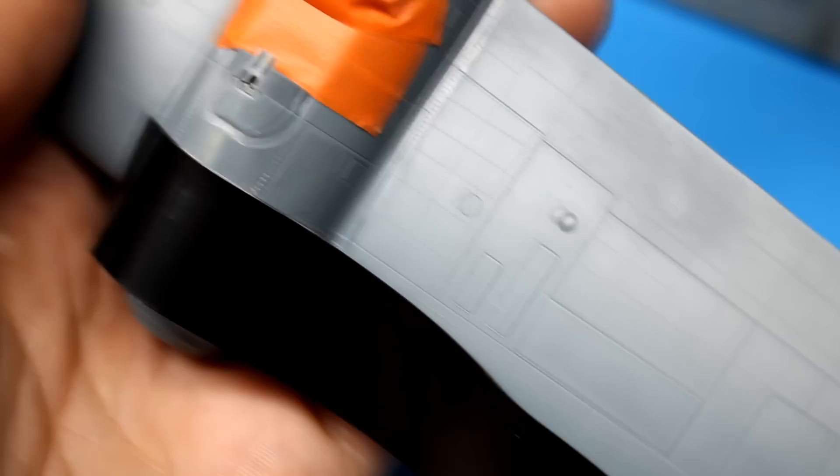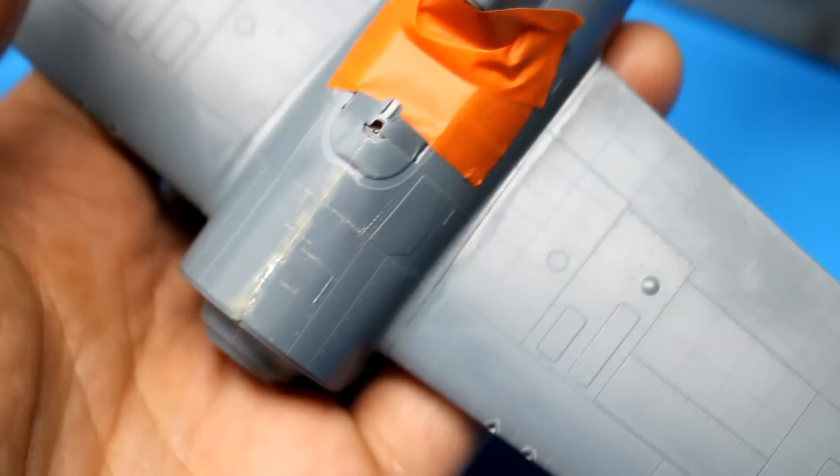Out comes the razor saw again to re-scribe the lost detail from cleaning up the seam. I make multiple light passes that way I don't push the tape out of place and end up with a line where I don't want it.